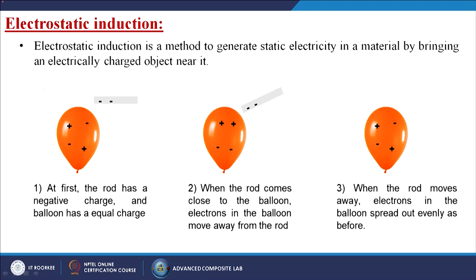For example, suppose I have one balloon that is initially in a balanced condition. Now I bring a negatively charged rod towards it. The rod has a negative charge and the balloon has a balanced charge. When the rod comes close to the balloon, electrons in the balloon move away from the rod. When the rod moves away, electrons in the balloon spread out evenly as before.